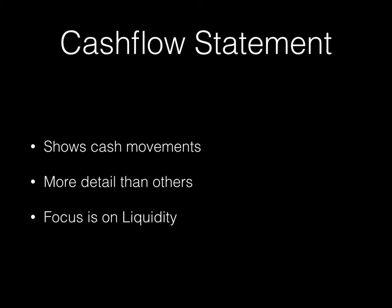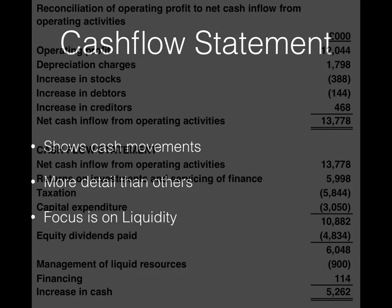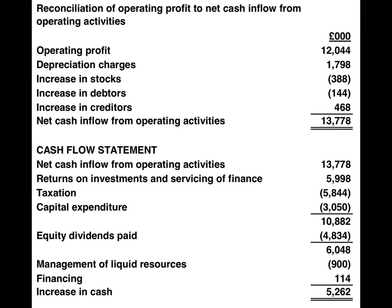A famous case where this happened was with the company Enron. They were reporting massive profits, but their cash flow statements didn't add up, and finally the company went bang. This is just a quick example showing you where all the money is coming in and how it's going out, and that is the final increase in cash.